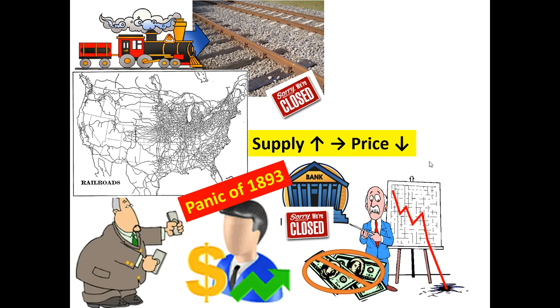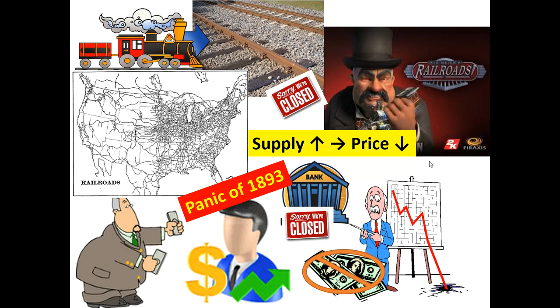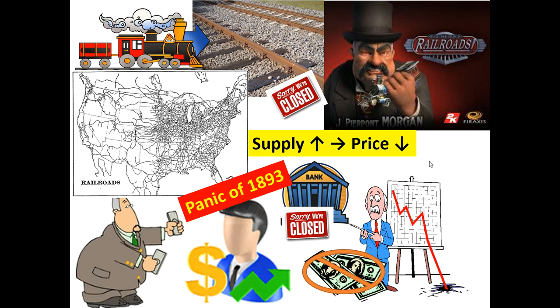This was created by an oversupply of railroads, which drove prices down, companies couldn't make money, they went under and brought the banks down with them, and when the banks went, the entire country went. This used to happen about every 10 to 15 years through American history. We had something close to it in 2008 with the Great Recession. That's the Panic of 1893.